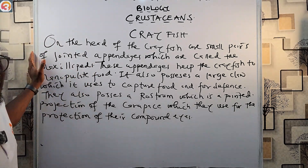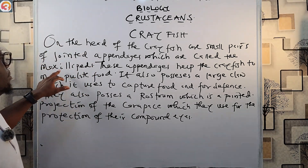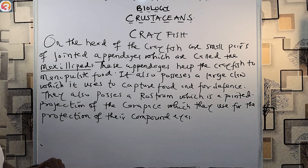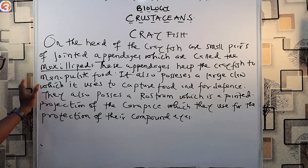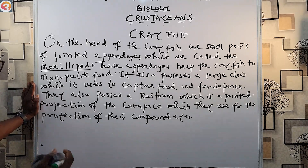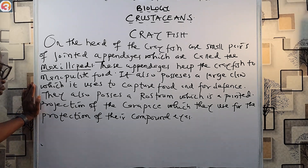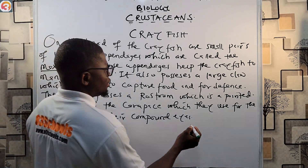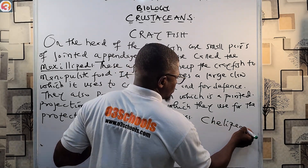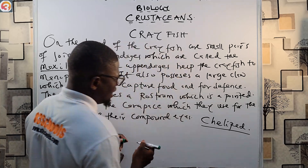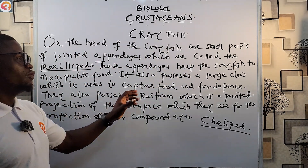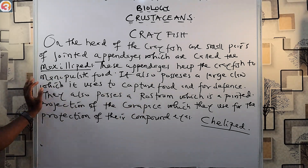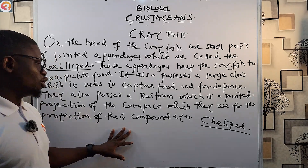So on the head of the crayfish are small pairs of jointed appendages called the maxillipeds, which help the crayfish to manipulate food. It also possesses a large claw — called the chelipeds — used to capture food and for defense. They also possess a rostrum, which is a pointed projection of the carapace used for the protection of their compound eyes.